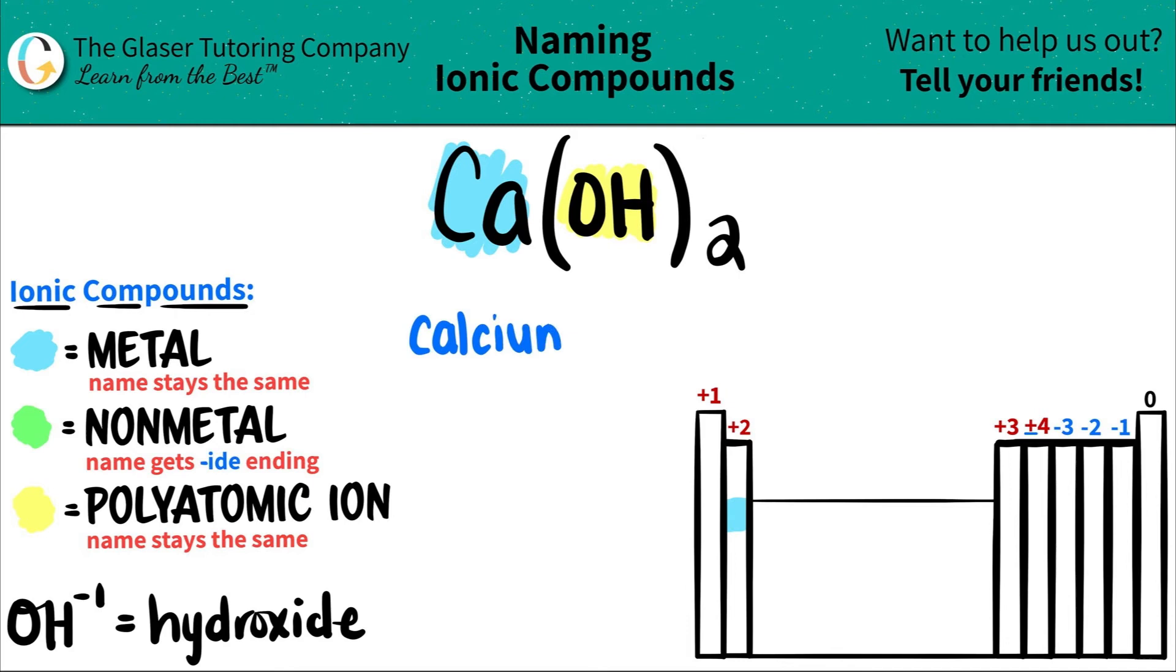That's I-U-M. The polyatomic comes next. The OH we're going to group together. And that name always stays the same. So that's kind of easy, but you just got to memorize them. So OH is hydroxide. So I'm just going to put hydroxide. You don't have to do anything to that name.